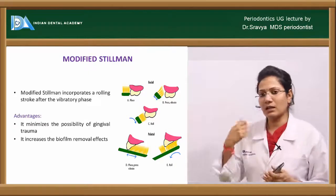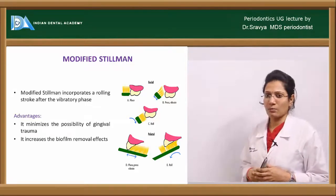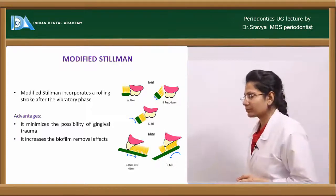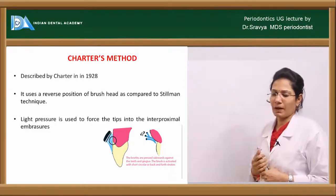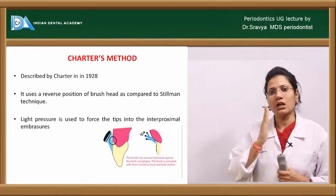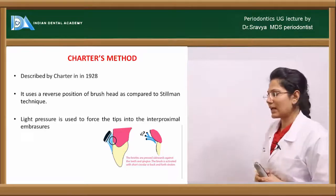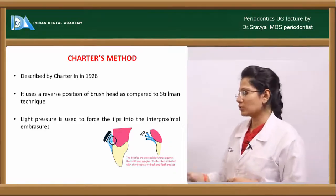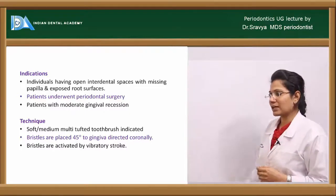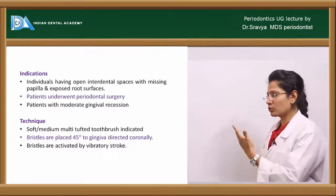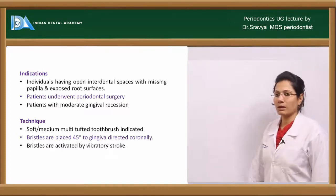Modified Stillman again incorporates a rolling technique followed by the vibratory phase. It can be adopted in cases of gingival recession. The Charters method, described in 1928, uses a reverse position of the brush compared to Stillman — the bristles face occlusally rather than toward the root surface. Light pressure is applied to force the tips into the interproximal embrasures. Its most important indication is for patients who have undergone periodontal flap surgery. A soft to medium bristle multi-filament toothbrush is indicated, with bristles placed at 45 degrees to the gingiva directed coronally and activated by a vibratory stroke.